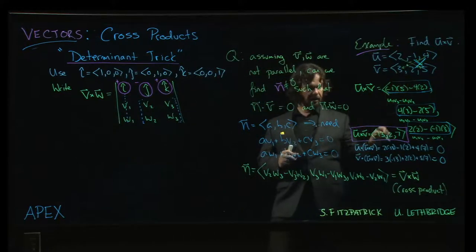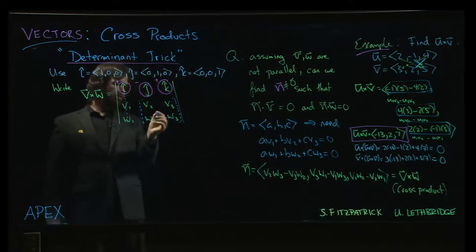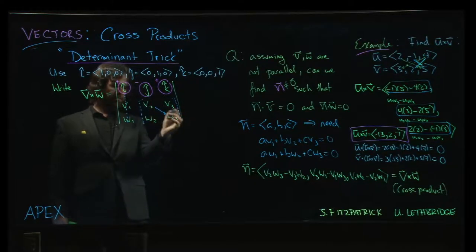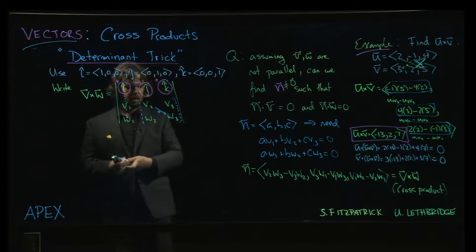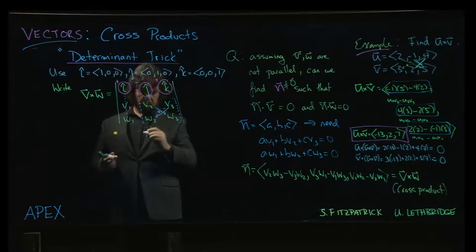In that two-by-two grid we do the same multiplication and subtraction. You multiply diagonally first going from the top left to the bottom right, and that one comes with a plus sign. Then you go across the other diagonal, and that one comes with a minus sign.